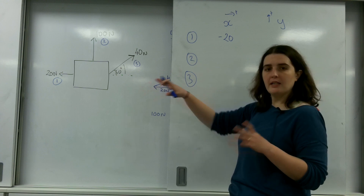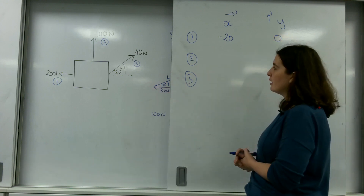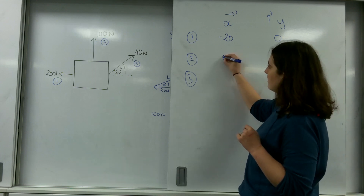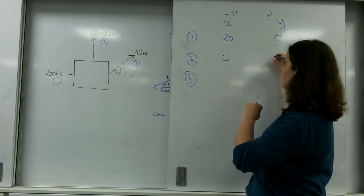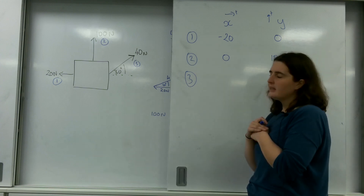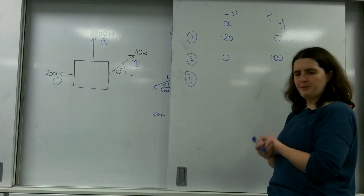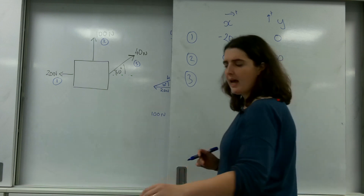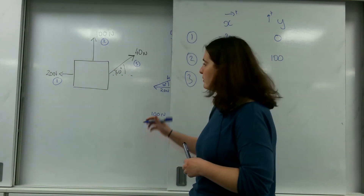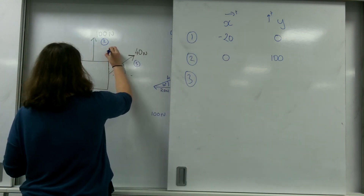Force 1 is acting in the x direction — since it's going left, it's negative 20 in x, and zero in y. Force 2 is not working in the x axis at all, but it is working in the positive y axis. Force 3 is more complex — at 40 newtons, it is working in both the x axis and the y axis, so this is when you need to take components.